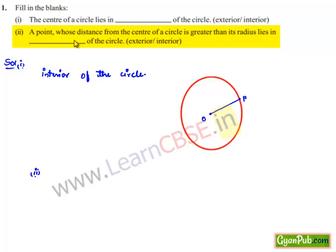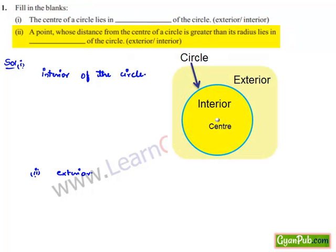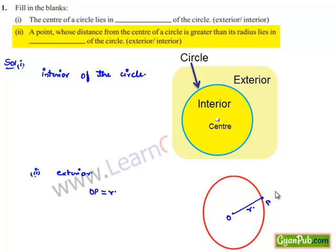Coming to the second bit: a point whose distance from the center of the circle is greater than its radius lies in the circle — that is, exterior. If we consider a circle with center O, we know that the radius is the distance between the center and any point on the circle. If we consider a distance greater than r, then that point always lies outside the circle. Therefore, a point whose distance from the center is greater than its radius always lies in the exterior of the circle.